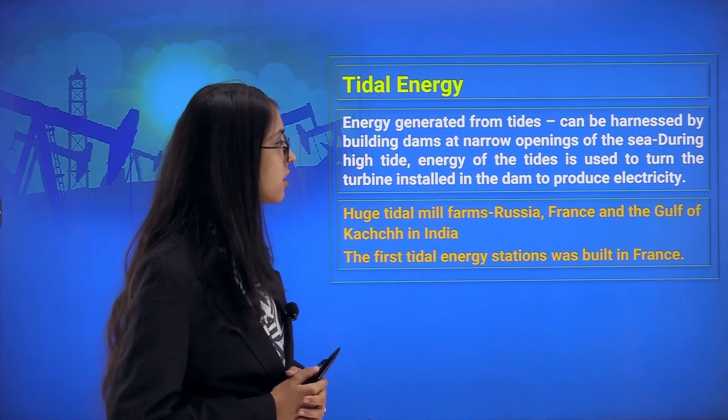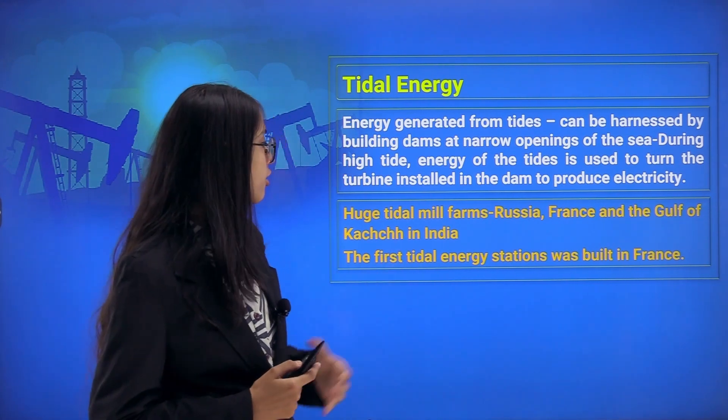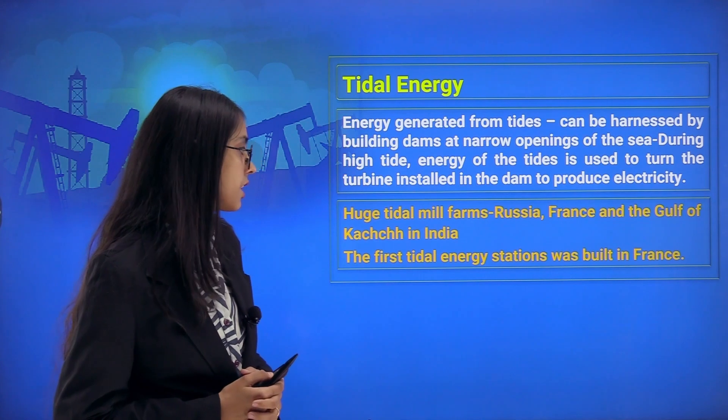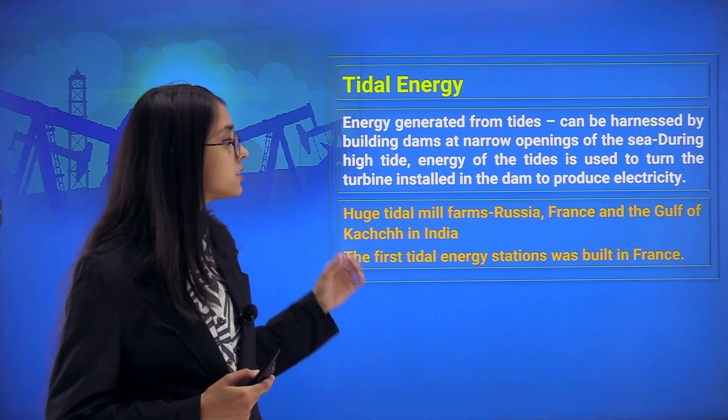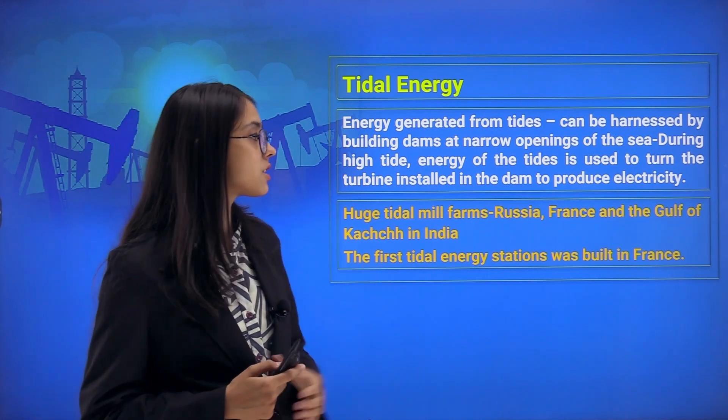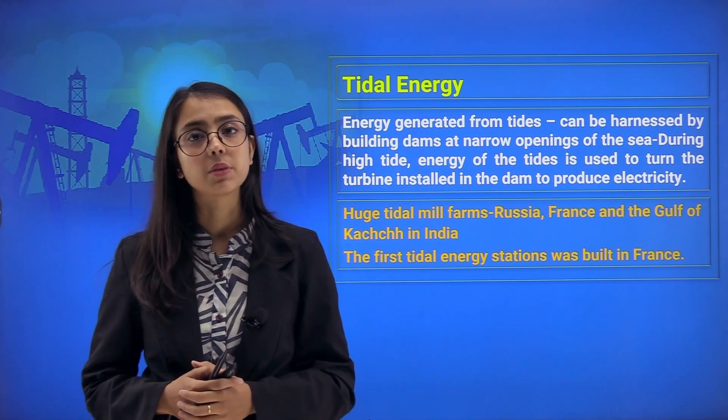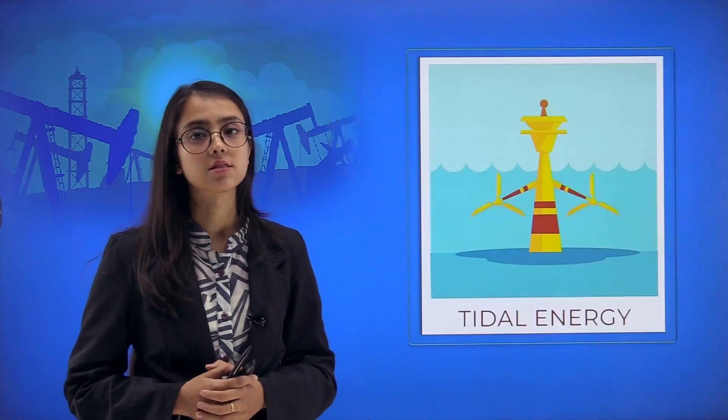Tidal mill farms are found in Russia, France, and the Gulf of Kutch in India. The first tidal energy stations were built in France.